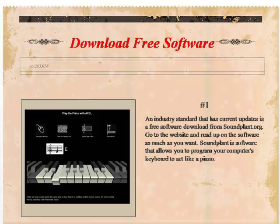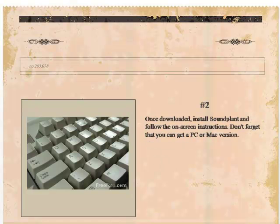Step 1: Download Free Software. An industry standard that has current updates is a free software download from SoundCloud.org. Go to the website and read up on the software as much as you want. Soundplant is software that allows you to program your computer's keyboard to act like a piano. Once downloaded, install Soundplant and follow the on-screen instructions. Don't forget that you can get a PC or Mac version.